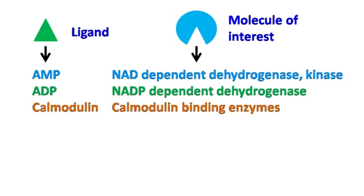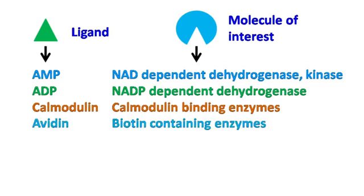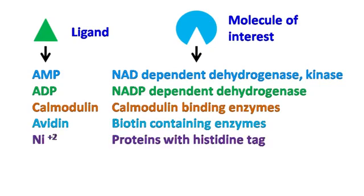Calmodulin for the purification of calmodulin-binding enzymes. Avidin can be used for the purification of biotin-containing enzymes. Metals such as nickel can be used for the purification of proteins that have a histidine tag. Lysine can be used for the purification of rRNA.